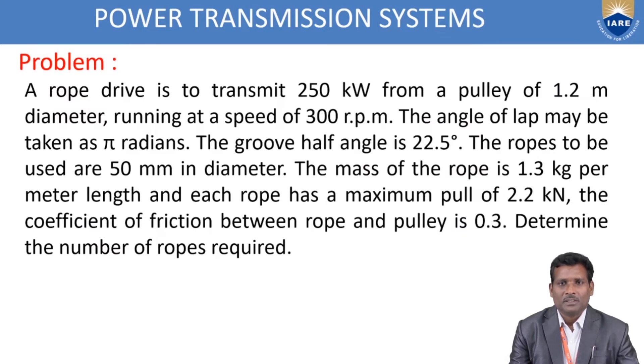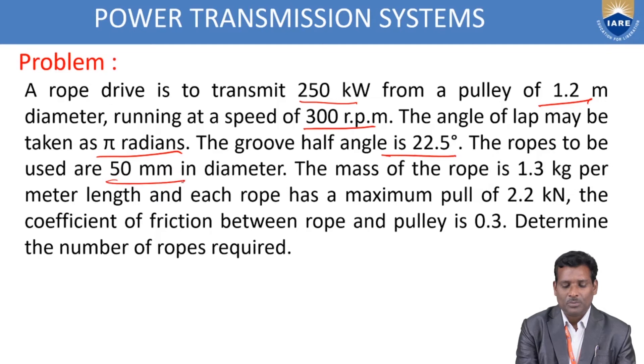We will see one problem on these rope drives. First study the problem very carefully and then apply the design calculation formulas. A rope drive is to transmit 250 kW from a pulley of 1.2 m diameter running at 300 RPM. The angle of lap is π radians and the groove half angle is 22.5°. The ropes are 50 mm in diameter, mass of rope is 1.3 kg per meter length, maximum pull is 2.2 kN, and coefficient of friction is 0.3.